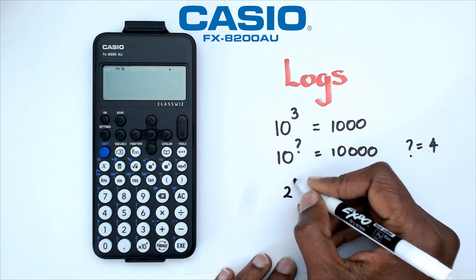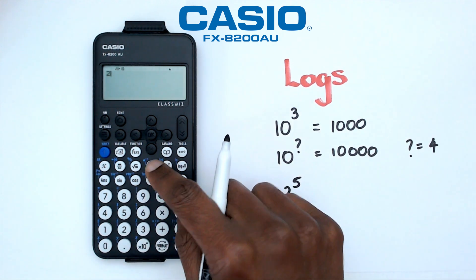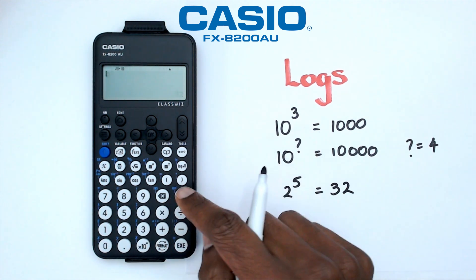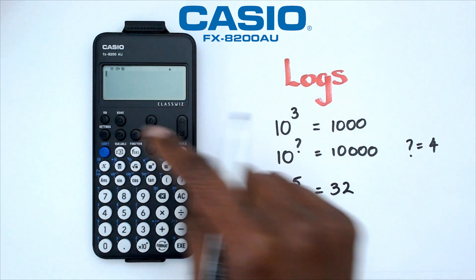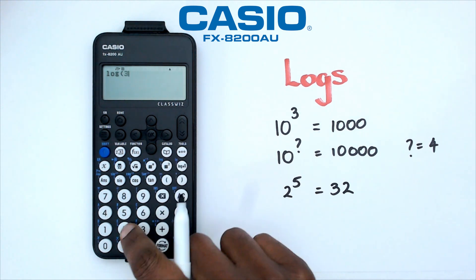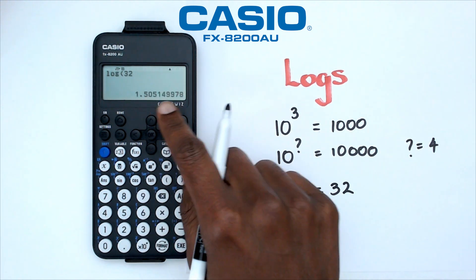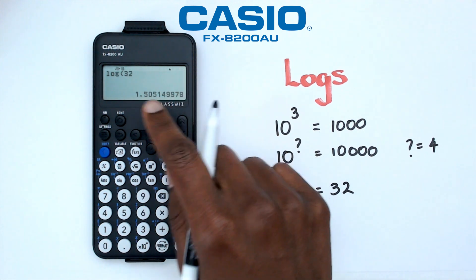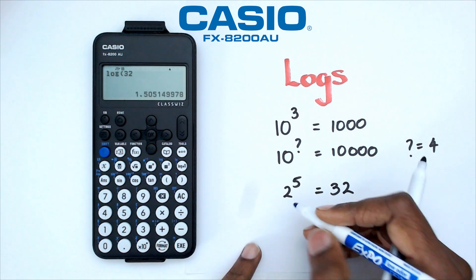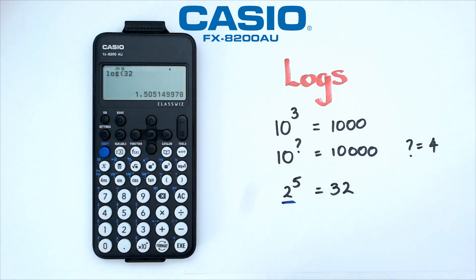So what do I mean by that? Let's take something like 2 to the power of 5 — we know that equals 32. However, if I do log of 32 using the simple log button, I'm actually getting 1.505, and that's because it's taken to base 10. So we need to make sure the base is 2 and not 10.